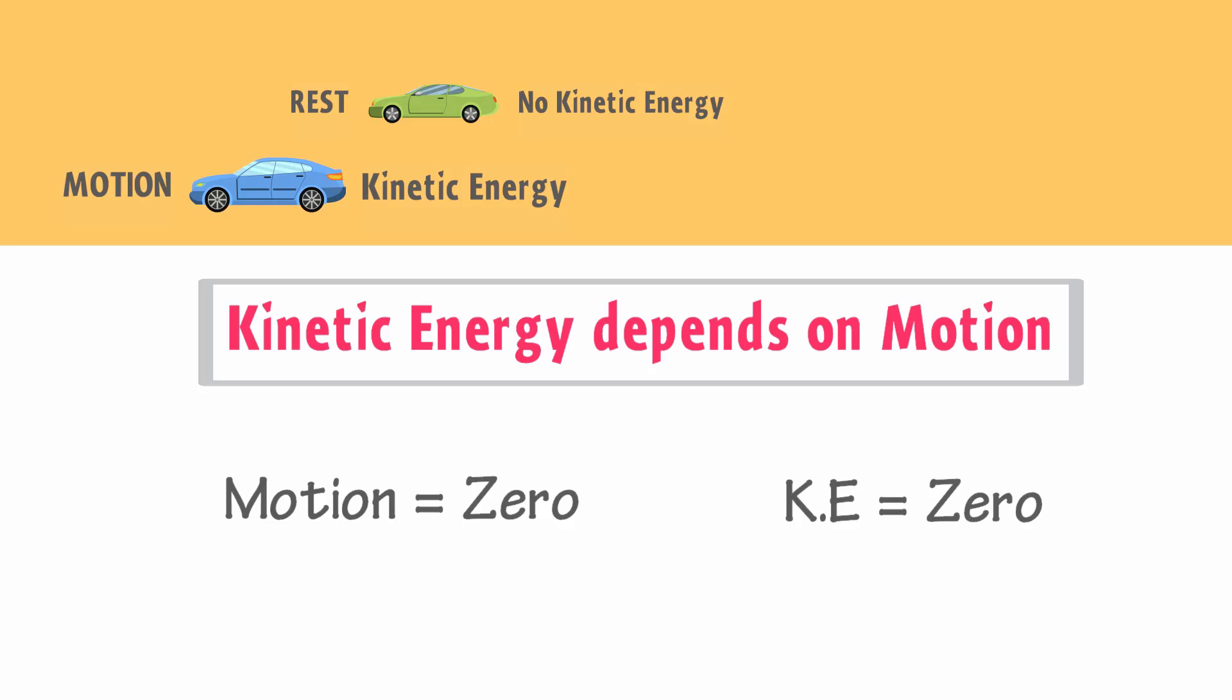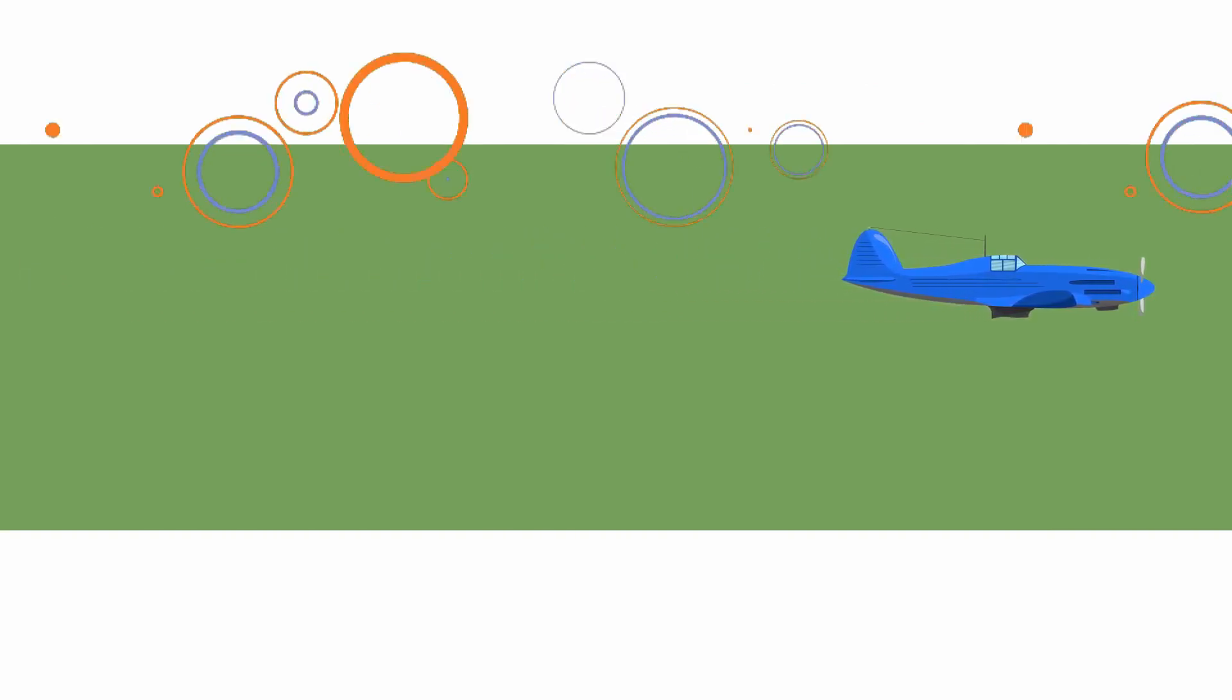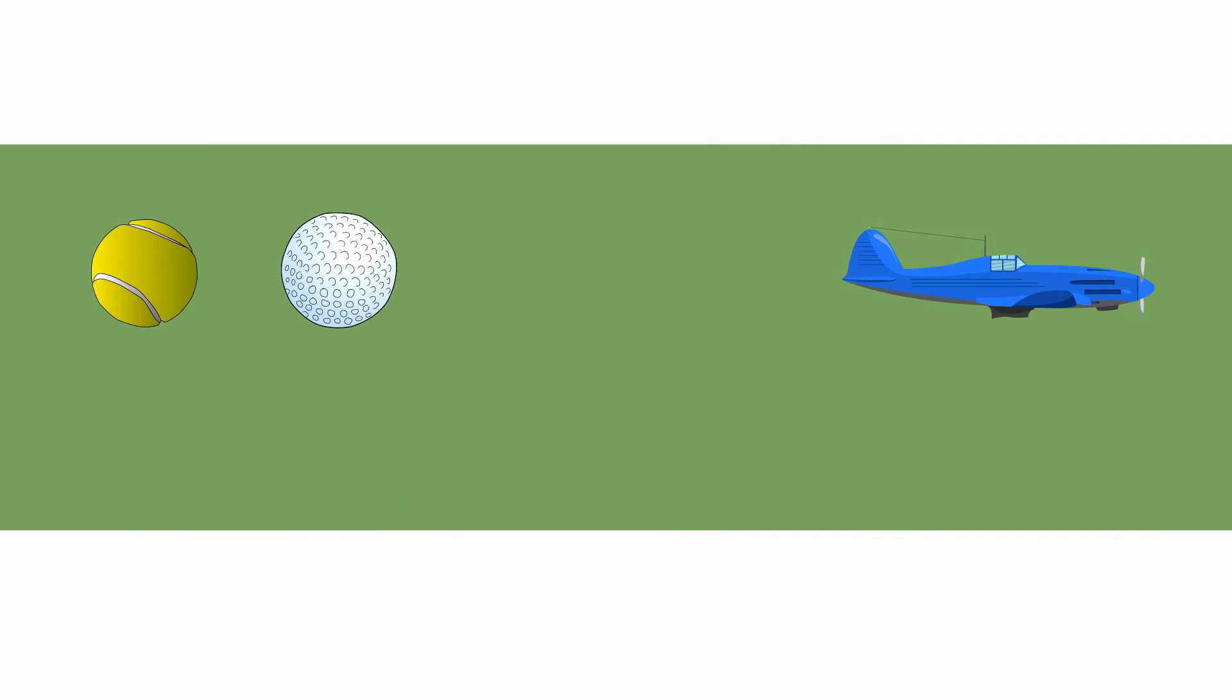Now, let me give you examples of kinetic energy. For example, a moving aeroplane has kinetic energy. A cricket ball thrown up has kinetic energy. A golf ball moving has kinetic energy. A car traveling across the road possesses kinetic energy.